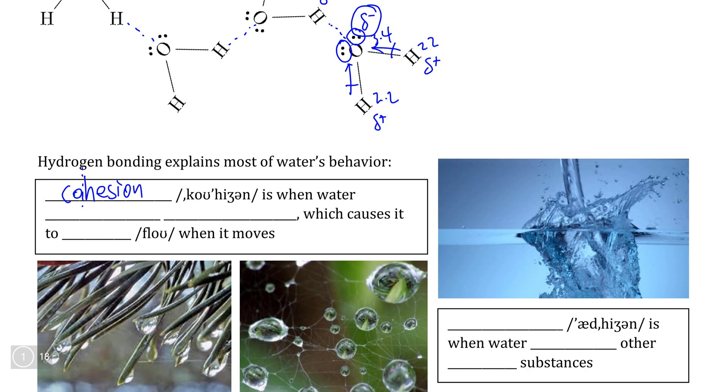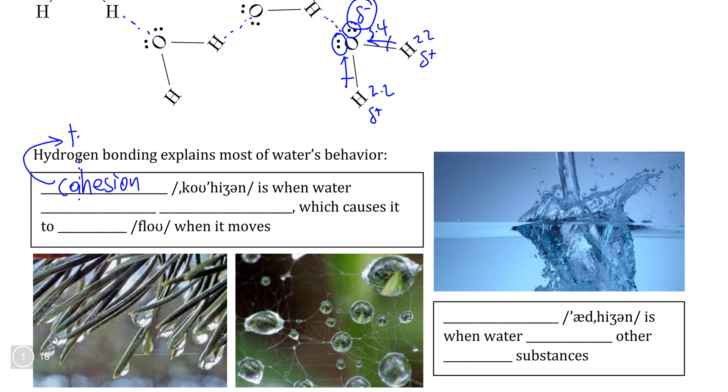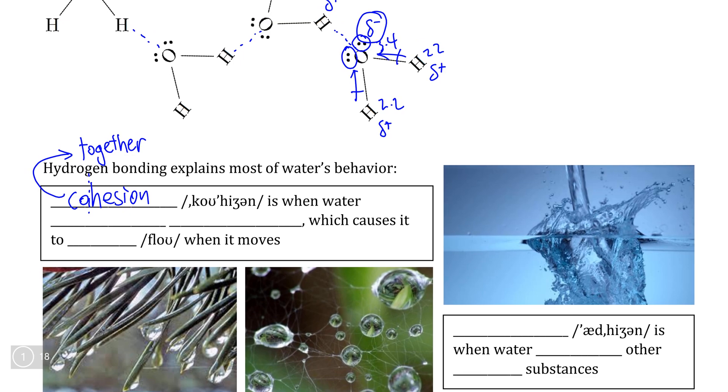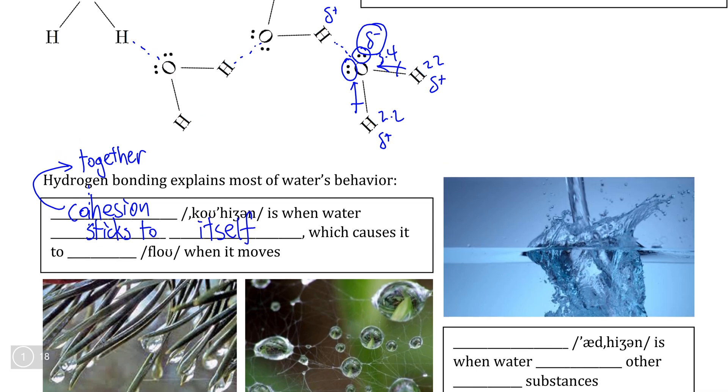So if we break apart this word, we can tell by the prefix co, the same prefix as in cooperative, that we are dealing with water's interaction together. Cohesion is the phenomenon that occurs when water sticks to or when it attracts to other water molecules, when water sticks to itself.